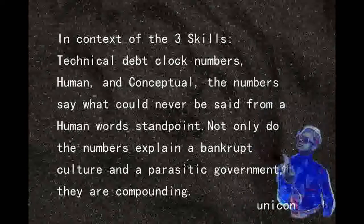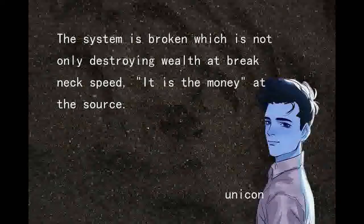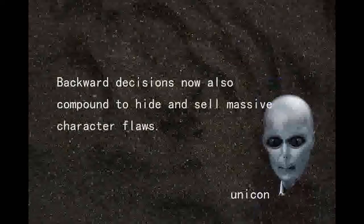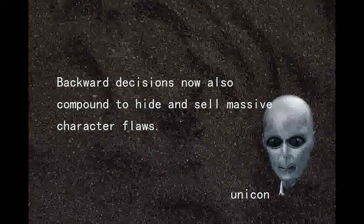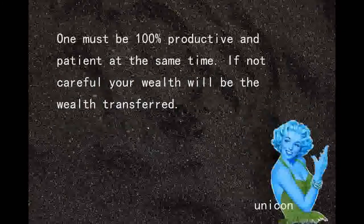In context of the three skills — technical, human, and conceptual — the debt clock numbers say what could never be said from a human word standpoint. Not only do the numbers explain a bankrupt culture and a parasitic government, they are compounding. The system is broken, which is not only destroying wealth at breakneck speed, it is destroying money at the source. This translates to a very dangerous time for protecting wealth or investing. One must be 100% productive and patient at the same time. If not, your wealth will be the wealth transferred.